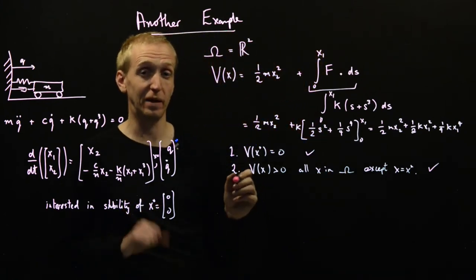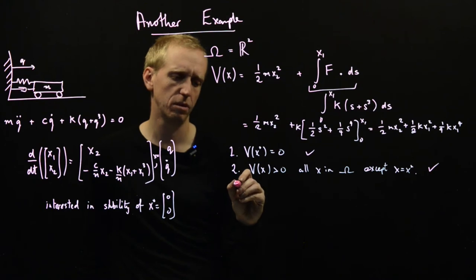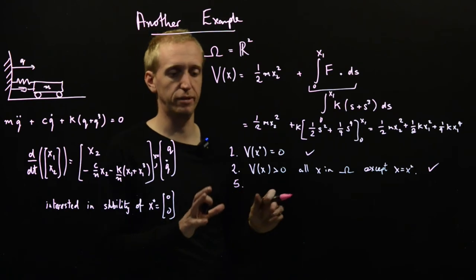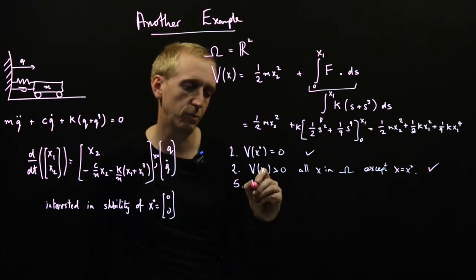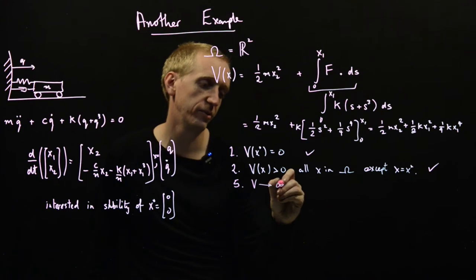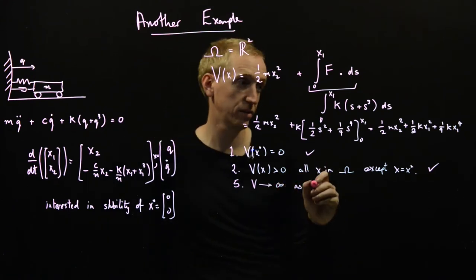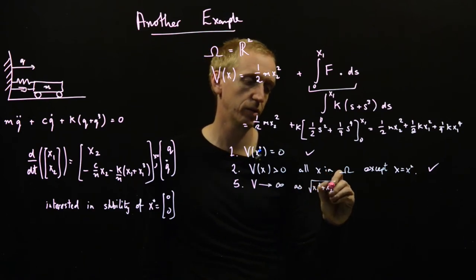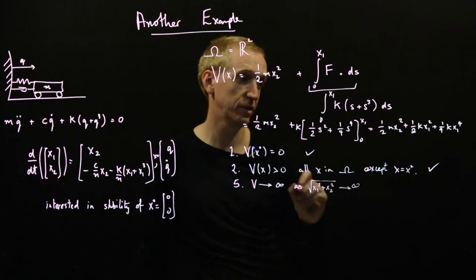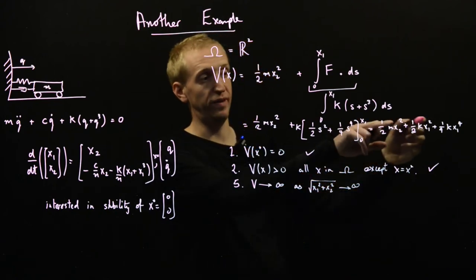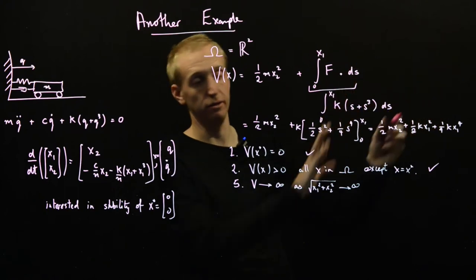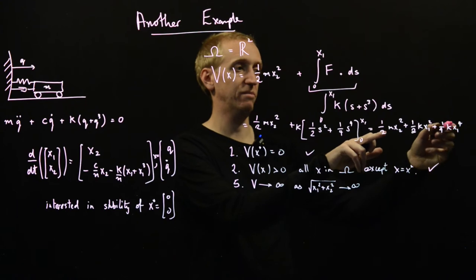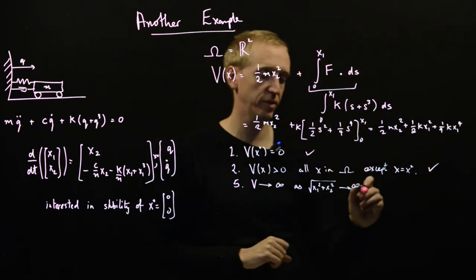We're going for global asymptotic stability. This was actually labelled as 0.5 I think when we gave all the definitions there. And for that we required that V tends to infinity as the length of x, so x1 squared plus x2 squared, tends to infinity. And just means if we put in extremely large values of x, is this thing going off to infinity? Well, yes. Because we've got an x1 squared and x2 squared and x1 to the 4. All of these things go off to infinity as we make them very large.